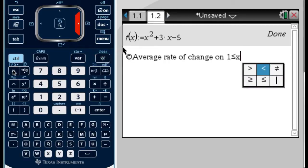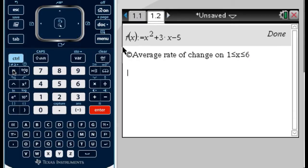And then 6. So I want the average rate of change on the interval from 1 to 6. Well, that's really just a slope. So what I want to do is f of, so I guess x2 in this case would be 6, minus f of x1, which would be 1, and then over 6 minus 1.